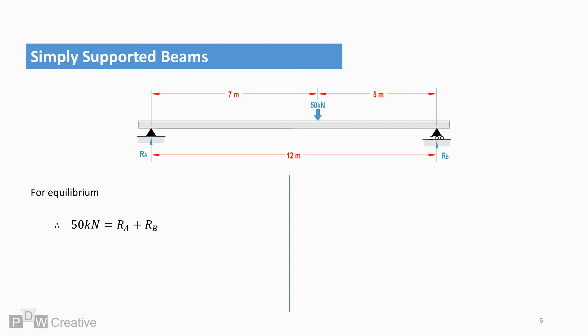So we can take either RA or RB as a case study. Let's take the moments about reaction RA. The 50 kN load is acting clockwise to RA, while RB is anti-clockwise.